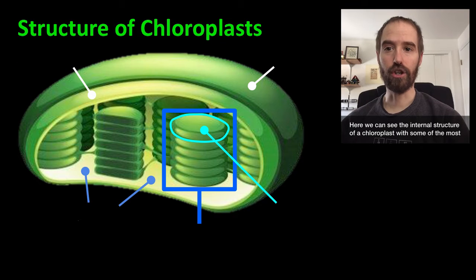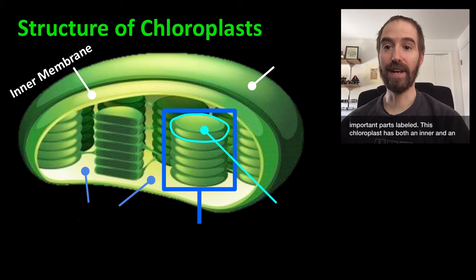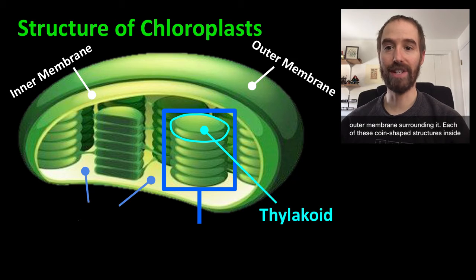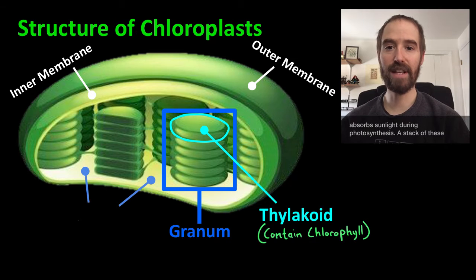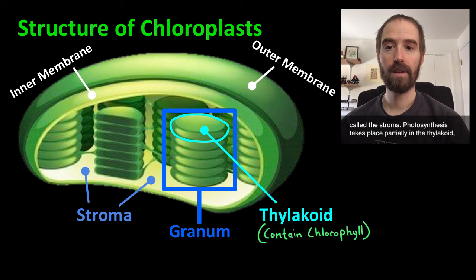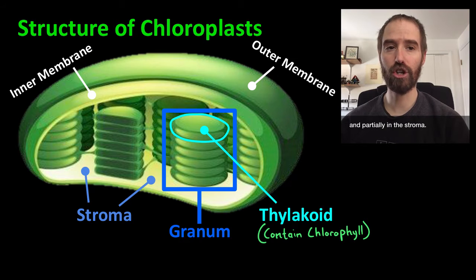Here we can see the internal structure of a chloroplast, with some of the most important parts labeled. This chloroplast has both an inner and an outer membrane surrounding it. Each of these coin-shaped structures inside is called a thylakoid, and they hold a pigment called chlorophyll that absorbs sunlight during photosynthesis. A stack of these thylakoids is called a granum, and the fluid-filled space between grana is called the stroma. Photosynthesis takes place partially in the thylakoid and partially in the stroma.